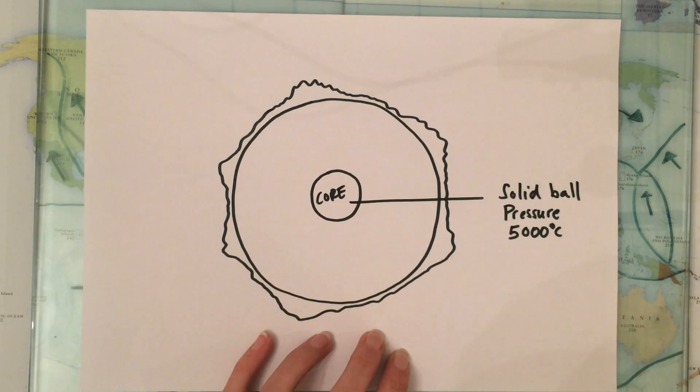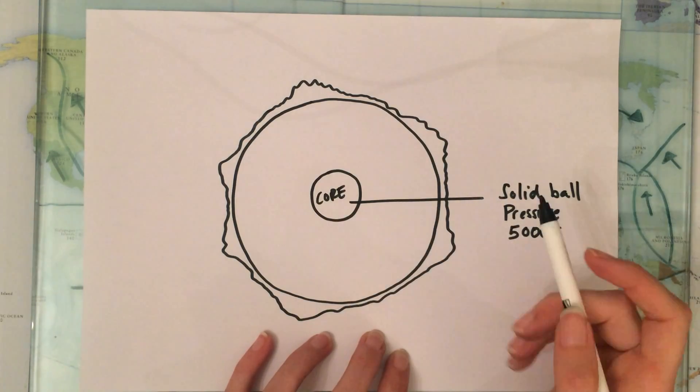Your oven is about 240 at its hottest so you can imagine 240 compared to 5,000 that's quite a big difference, this is very very hot.